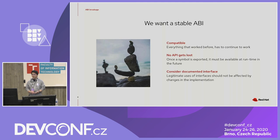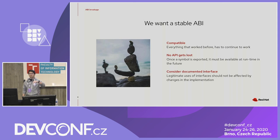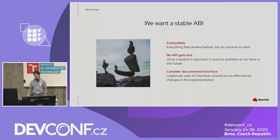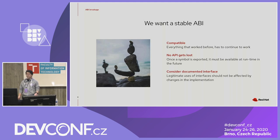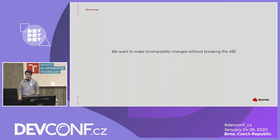What we want is to have a stable ABI, meaning that everything that worked before has to continue to work. Old applications compiled against the old version of the library should be able to run against the new version. We should consider only the documented behavior — if the user is using some internal API or an undocumented manner, they are not covered by the contract. This is to be fair with the developer. We want to make incompatible changes without breaking the ABI.